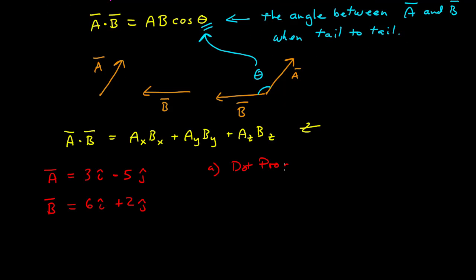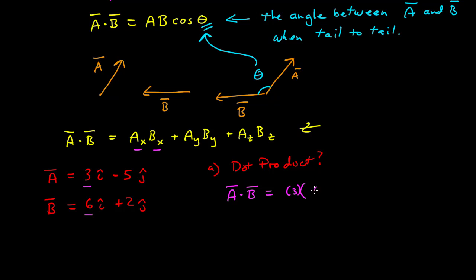So let's do an example. Since we have the components, the easiest way to calculate this is using the components. A dot b is equal to the x component of a, which is 3, times the x component of b, which is 6, plus the y component of a, which is minus 5, times the y component of b, which is 2. This is 18 minus 10, equal to 8.